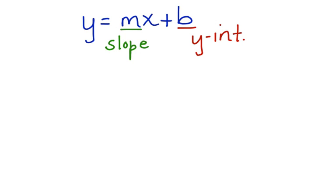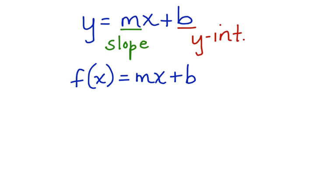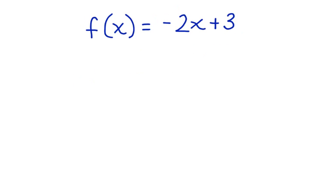A function can also be in this form. Let's take a look at what that would look like. We can say that the function of x is equal to mx plus b. Now let's consider the function negative 2x plus 3. We want to use this function notation to find different values for the function of x.